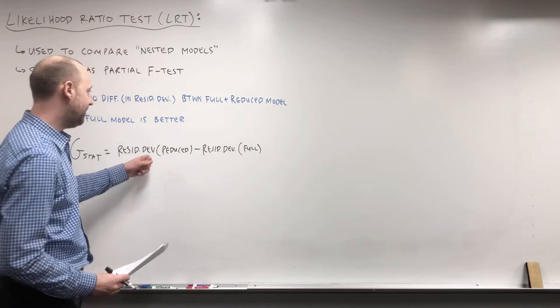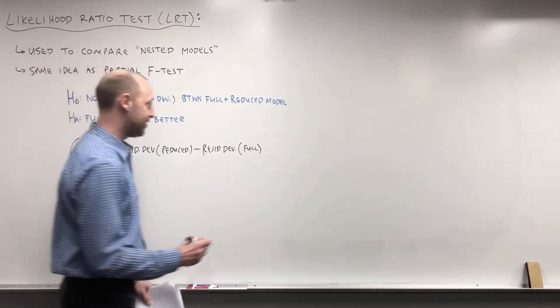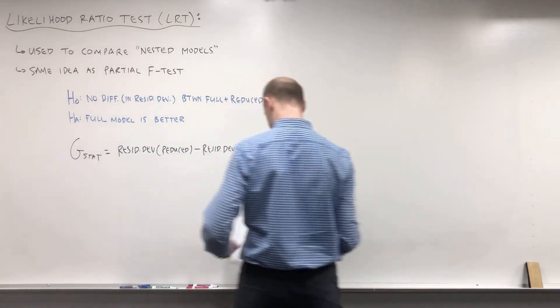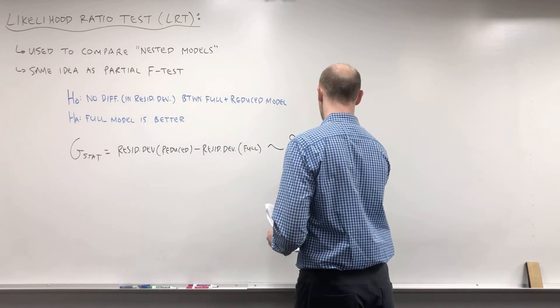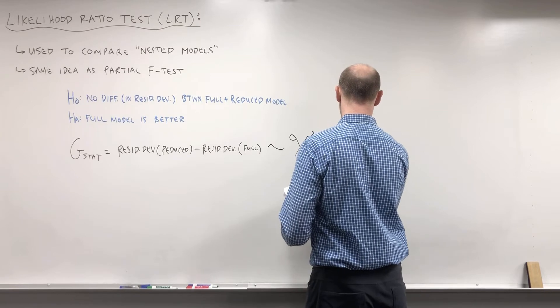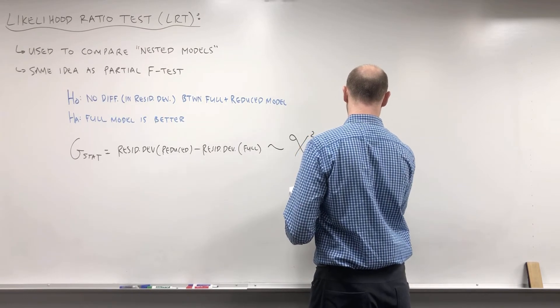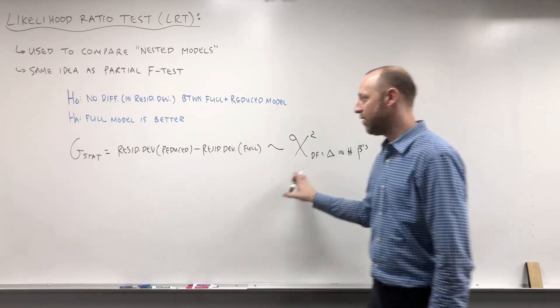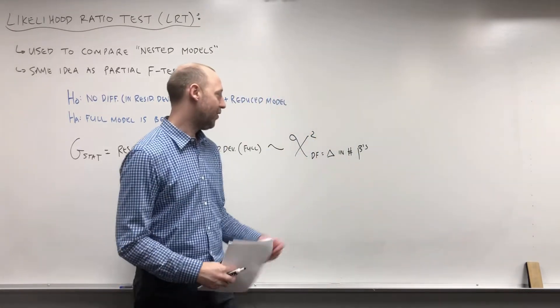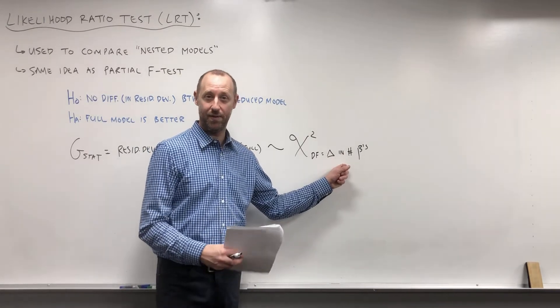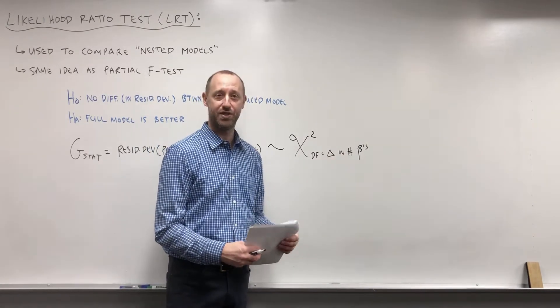It's looking at the change in the residual deviance or the unexplained error. This follows a chi-square distribution. The degrees of freedom are the change in the number of coefficients. That's the same as what we saw with the partial F-test, which followed an F distribution with degrees of freedom equal to the change in the number of terms or coefficients dropped from the model.